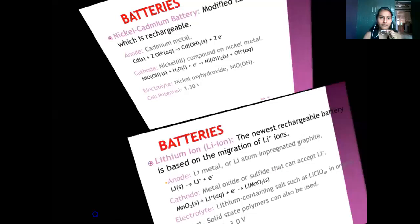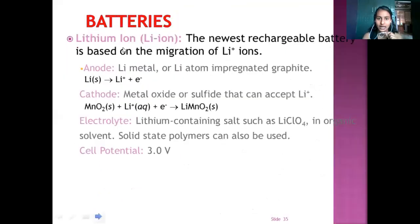Next is lithium ion, Li ion. The newest rechargeable battery is based on migration of Li plus ions. Anode, Li metal or Li atom which is impregnated graphite and forms reaction as Li solid is converted to Li plus plus 1 electron. Electrolyte, LiClO4 in organic solvents. Solid state polymer also are used in this cell. The cell potential for battery is 3.0 volt.